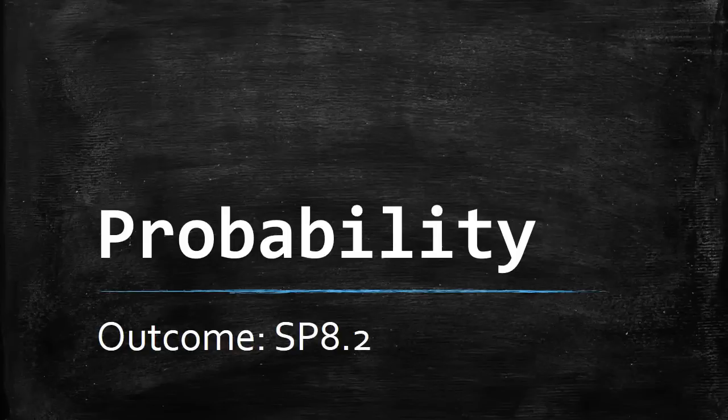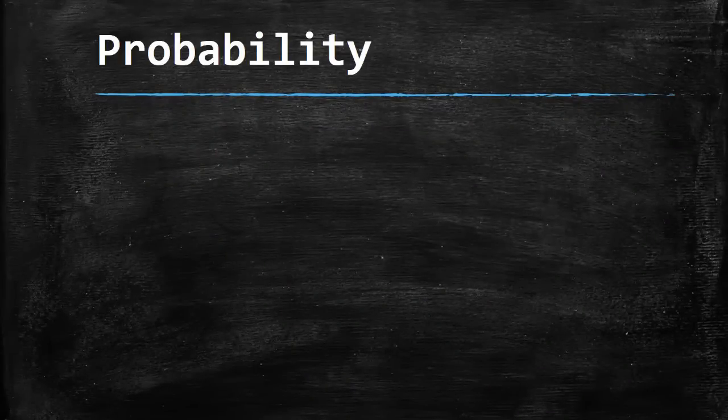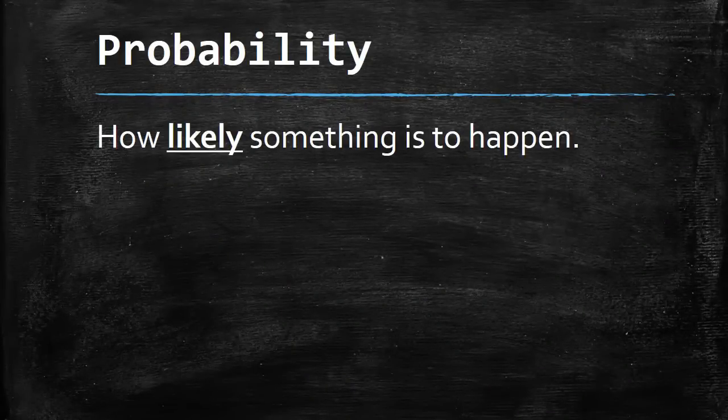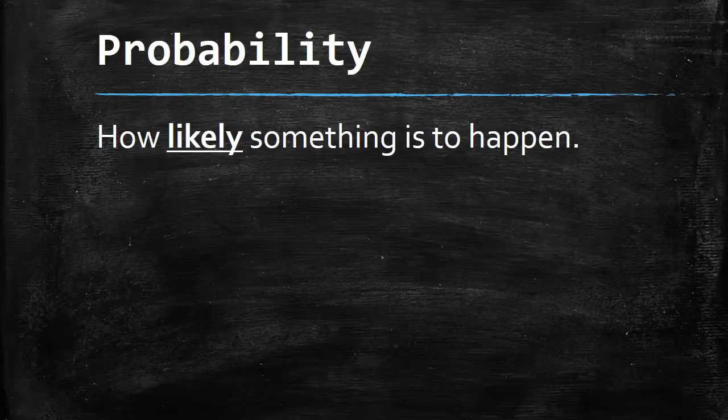Here we're going to look at probability and how it applies to certain types of events. We should start by looking at what probability is. Probability is just how likely something is to happen. When we say probability, we're looking at how likely something is going to happen.